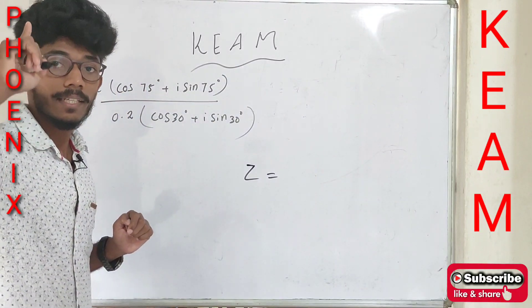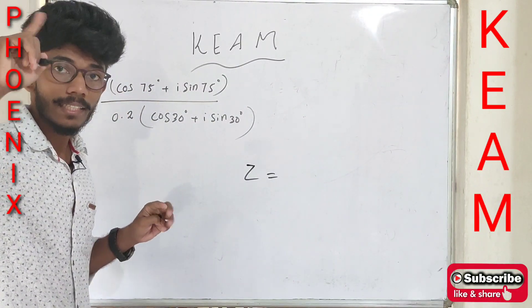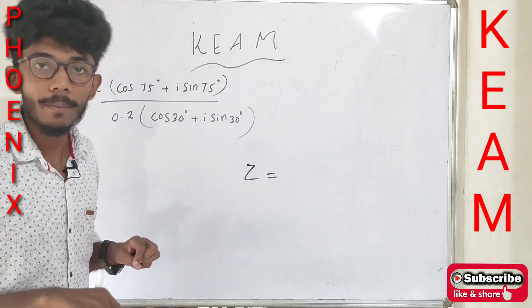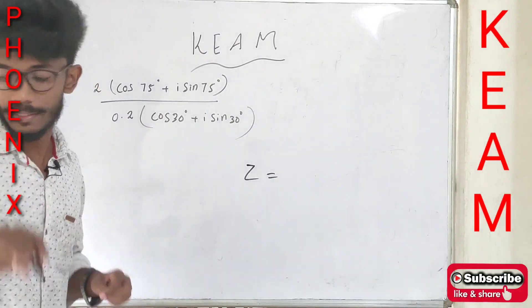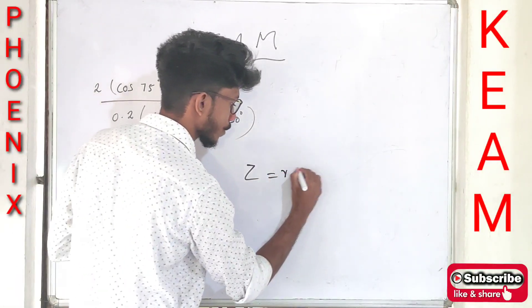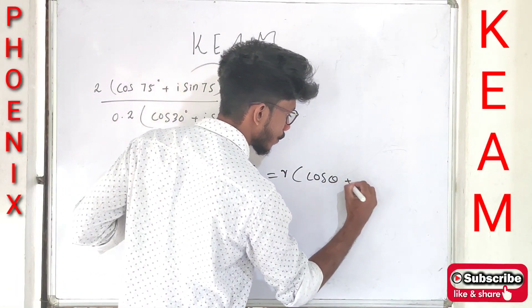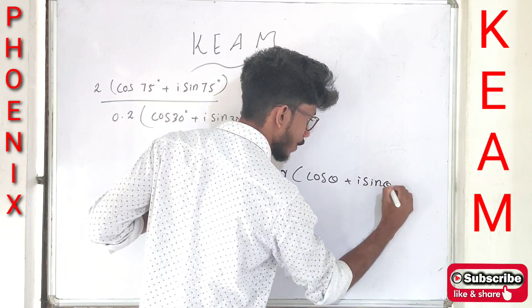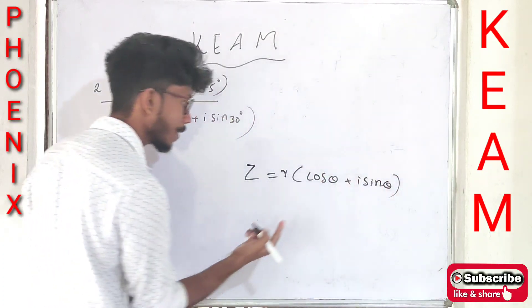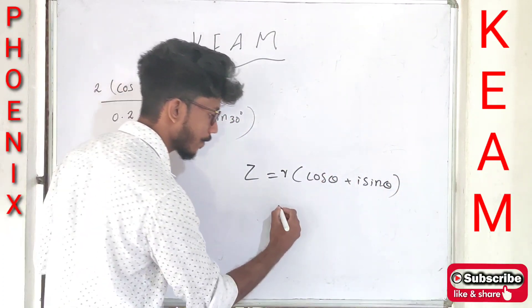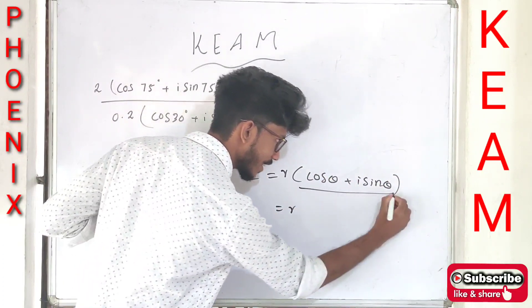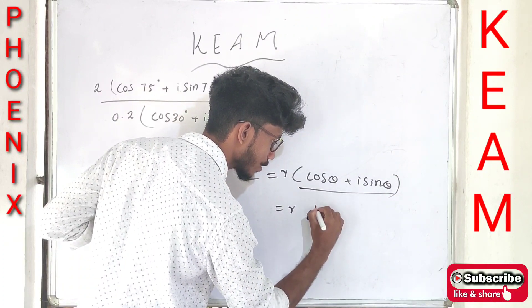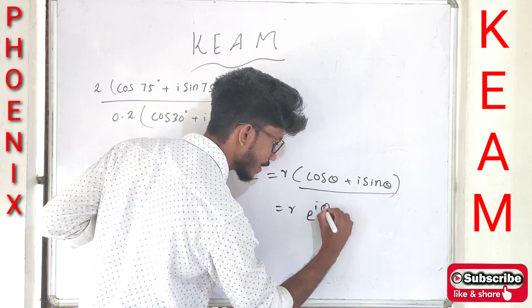If we have r(cos θ + i·sin θ) in complex numbers, the exponential formula gives us r·e^(iθ).